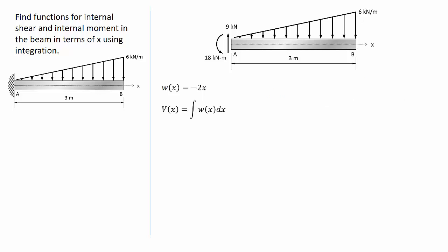Now, I will find my internal shear function in terms of x by integrating the distributed load function that we just found. I plug in for my distributed load, negative 2x, and evaluate it. I get negative x squared plus c. Don't forget the constant of integration.